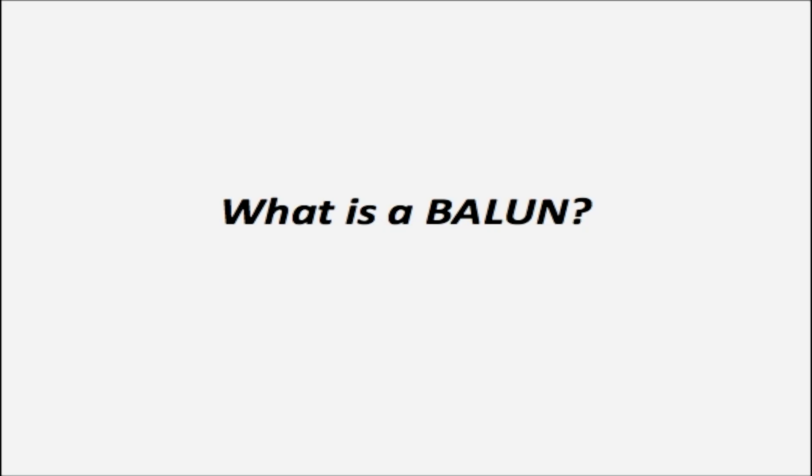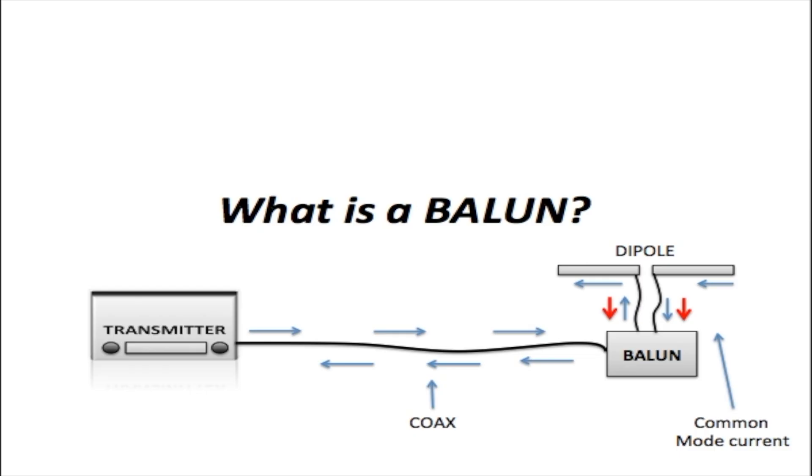A Balun connects a balanced antenna like a dipole to an unbalanced transmission line like coax and it also provides impedance matching. But more than that, it blocks common mode current as shown with the red arrows from traveling back to the shield of your coax which can mess with your signal and cause noise.